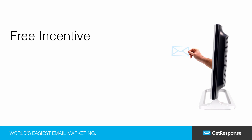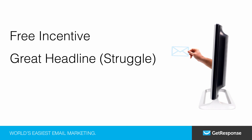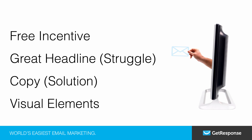So let's recap. The first thing you want to do is make sure that you have a free incentive that helps your audience accomplish a specific goal or overcome a specific struggle. Then, you want to create a headline that addresses their struggle. And then, you want to use copy that provides the solution, gives social proof, and sets expectations. And lastly, feel free to experiment with the visual elements of your opt-in form. That's pretty much it for this video. I hope you got a ton of value from it. My name is Leslie Samuel, and I wish you all the best on your blogging journey.